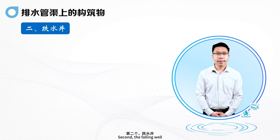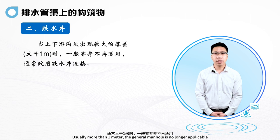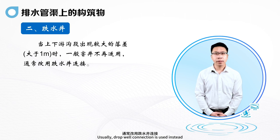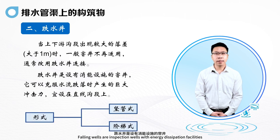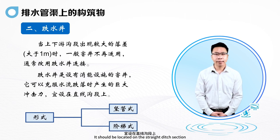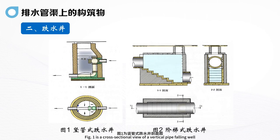Second, the falling well. When there is a large gap between upstream and downstream ditches — usually more than one meter — the general manhole is no longer applicable, and drop well connection is used instead. Falling wells are inspection wells with energy dissipation facilities that can overcome the huge impact force when water flow falls. It should be located on the straight ditch section. Forms of falling wells include vertical pipe type and stepped type. Figure one is a cross-sectional view of a vertical pipe falling well; Figure two is a schematic diagram of a stepped falling well.